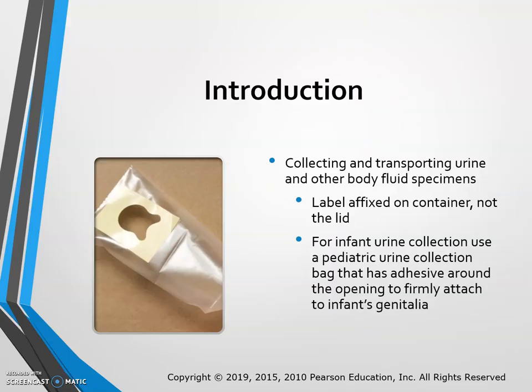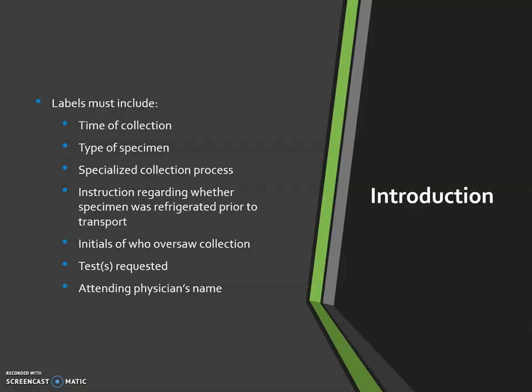When collecting and transporting urine and other bodily fluid specimens, we label the container, not the lid. For infants, urine collection uses an adhesive pediatric urine collection bag firmly attached to the infant's genitals. The label must include time of collection, type of specimen — whether urine, cerebrospinal fluid, or wound culture — specialized collection instructions, refrigeration requirements, initials of who oversaw the collection, tests requested, and the attending physician's name.